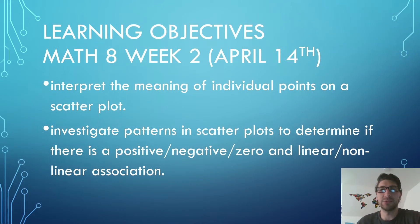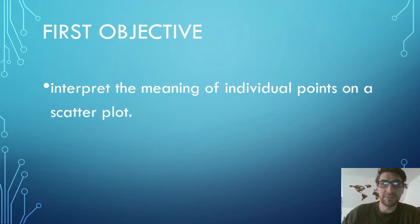Today's lesson will cover the objectives, which are the same as week two of the Math 8 BCPS Remote Learning Packet, the week of April 14th. Students will interpret the meaning of individual points on a scatter plot and investigate patterns in scatter plots to determine if there is a positive or negative and linear or nonlinear association in the data. The first objective we're going to cover today is to interpret the meaning of individual points on a scatter plot.